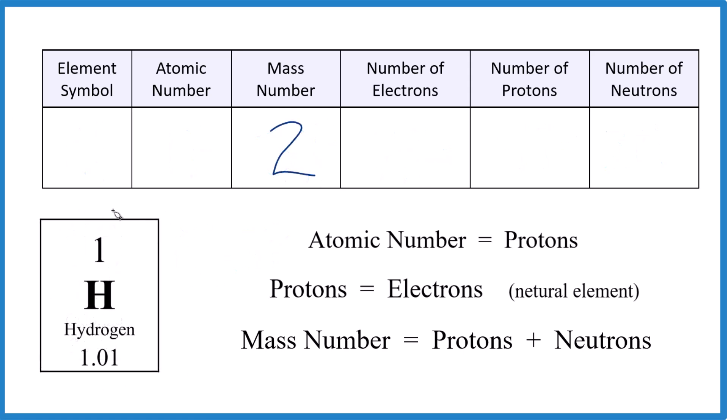Let's work with hydrogen here, and I'm only giving you the mass number of two. So find those neutrons, protons, electrons, atomic number, and the symbol. Pause, give it a try.